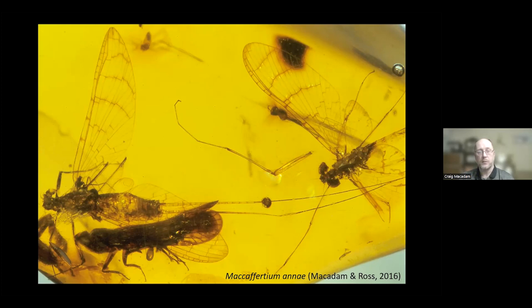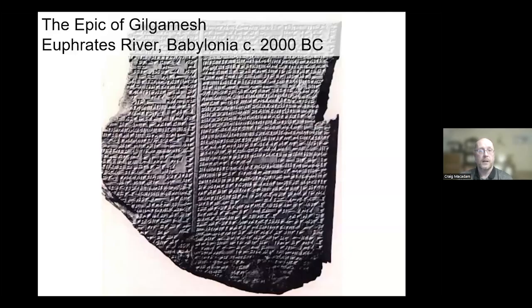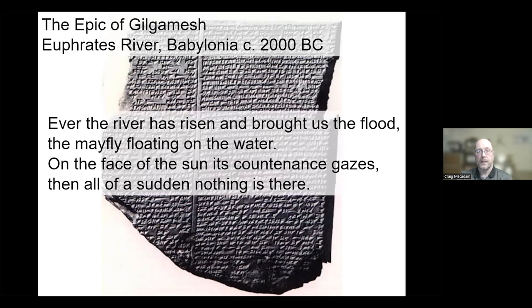Looking at the first records of mayflies in the written record, we have a long history of people talking about them. This series of clay tablets forms the Epic of Gilgamesh, about a ruler in ancient Babylonia who thought he was immortal. There's a reference to mayflies: 'Ever the river has risen and brought us to flood, the mayfly floating on the water, on the face of the sun its countenance gazes, and all of a sudden nothing is there.' It's talking about the brief adult life of a mayfly.